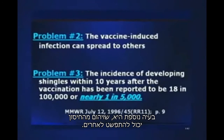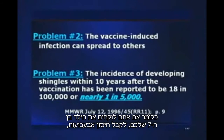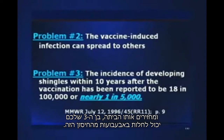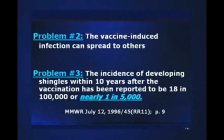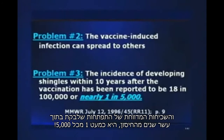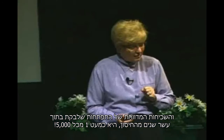Another problem is that vaccine-induced infection can spread to others — meaning if your seven-year-old gets the chicken pox vaccine and you bring them home, your three-year-old can come down with chicken pox from that vaccine. Additionally, the incidence of developing shingles within 10 years after vaccination has been reported to be almost 1 in 5,000.